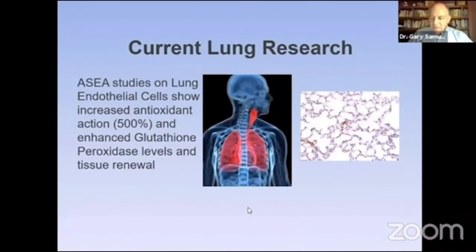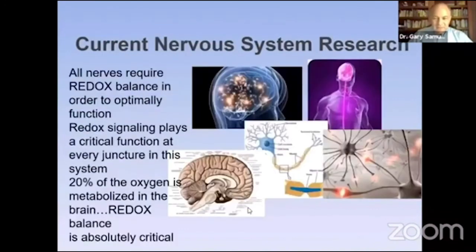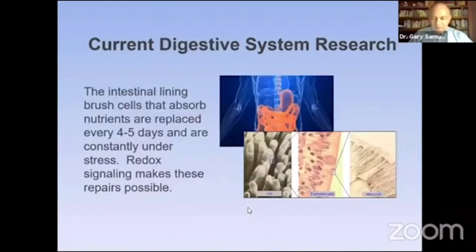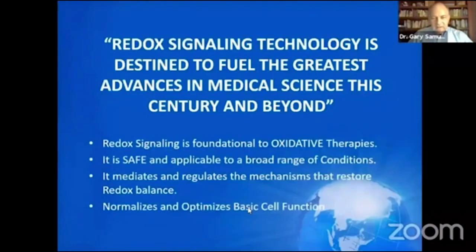We saw the most incredible things on the regeneration of lung tissue in animals — though we can't discuss it fully as it was early research before we finalized the technology. Digestive system research shows it helps the digestive system replace cells. Cell signaling is important in the nervous system, and it aids there as well. It's safe and applicable to everything.